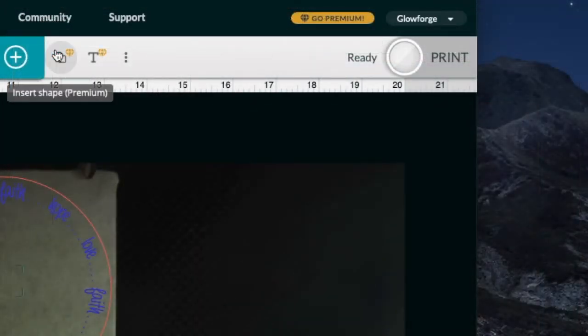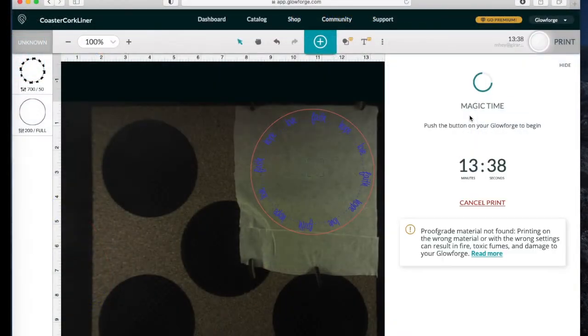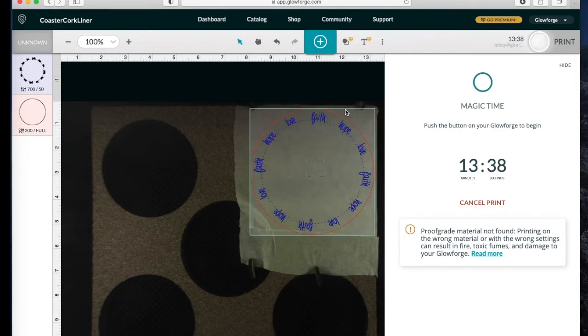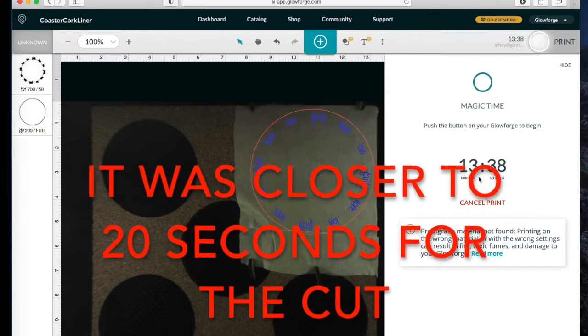Now that I have all my settings in, I can click right here on Print. So this one coaster, and it's because of all this engraving, is going to take roughly 13 and a half minutes. If I didn't have the engraving, this cut would probably take maybe 12 seconds, but the engraving really adds a lot of time.